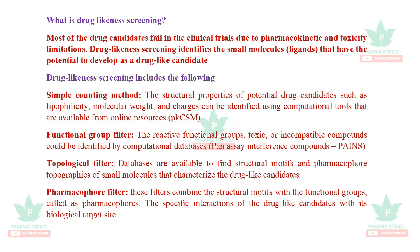Drug likeness screening includes: first, simple counting methods — structural properties of potential drug candidates such as lipophilicity, molecular weight, and charges can be identified using computational tools and online resources like pkCSM. Second, functional group filters — these filter reactive functional groups, toxic or incompatible compounds, identified by computational databases and pan-assay interference compounds (PAINS).